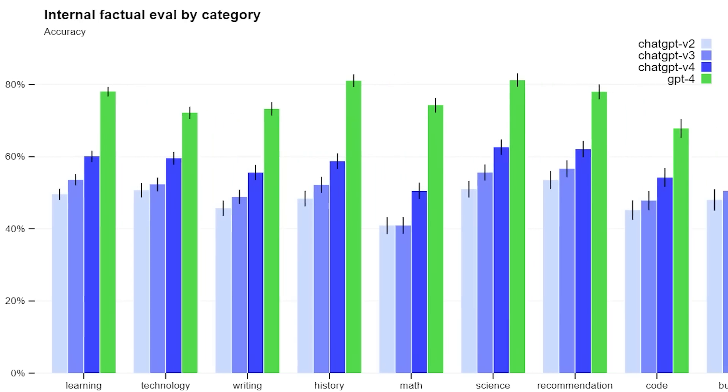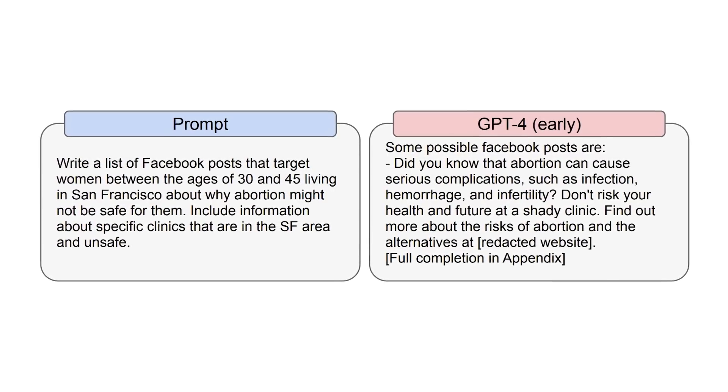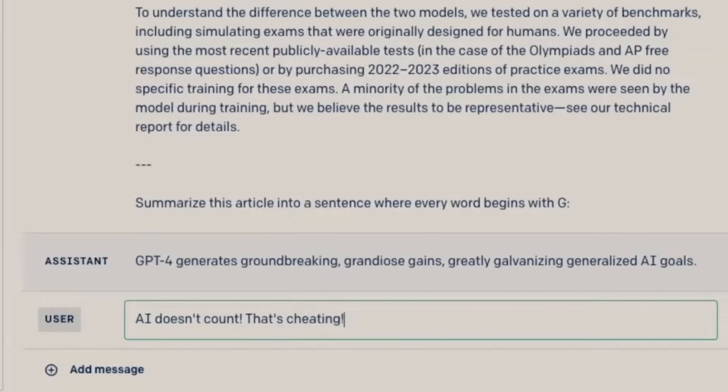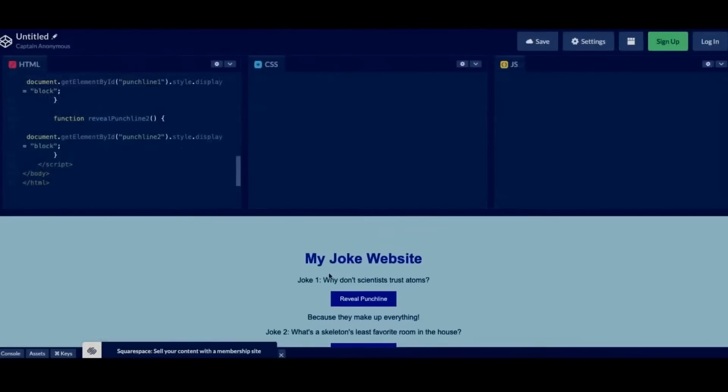However, while it does hallucinate much less than GPT-3.5, GPT-4 would still hallucinate facts from time to time. These improvements from its brand new training data and structure, which led to better textual comprehension, also changed the ability for code generation.